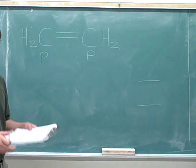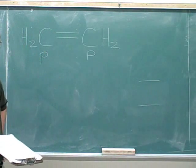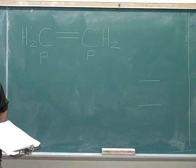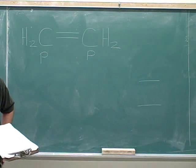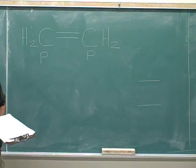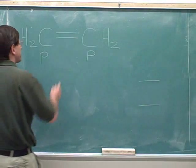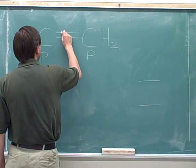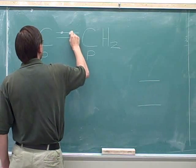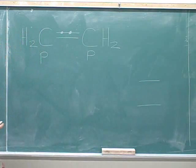One thing that is very important for us to know is how many pi electrons there are in the molecule. How many pi electrons are there in acetylene? The only pi electrons here are in the pi bond — two electrons in the bond — so there are two pi electrons.